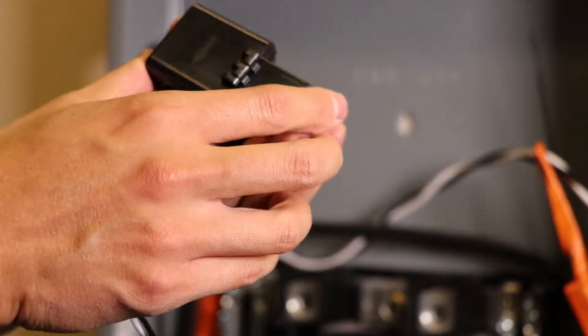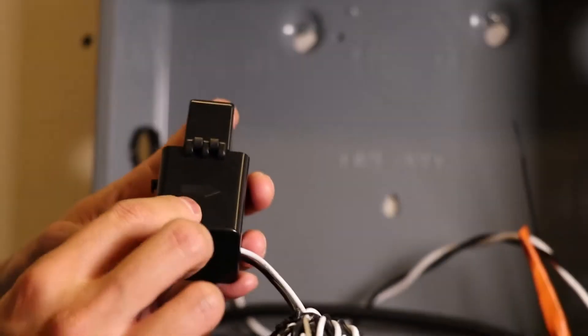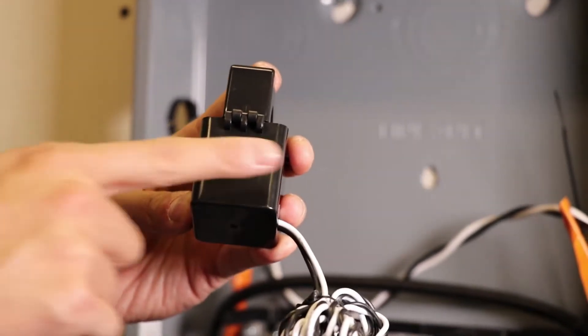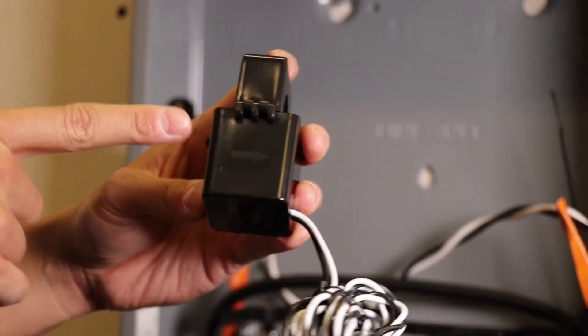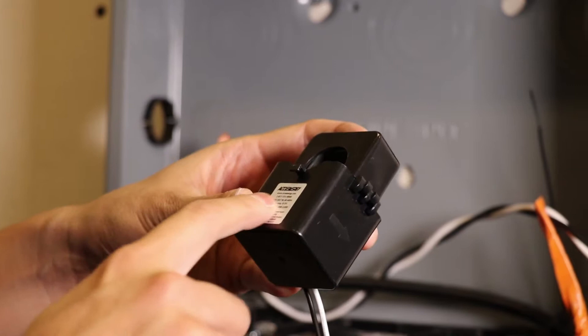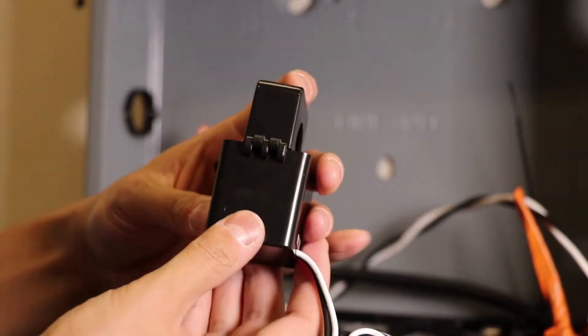There is an indicator on this that is an arrow. This arrow also goes in the direction of the current, so be sure that this arrow goes the same direction as the load and the label here goes towards the source of the current when installing.